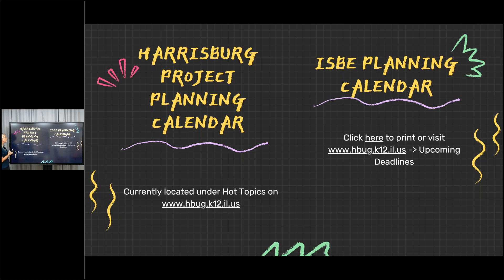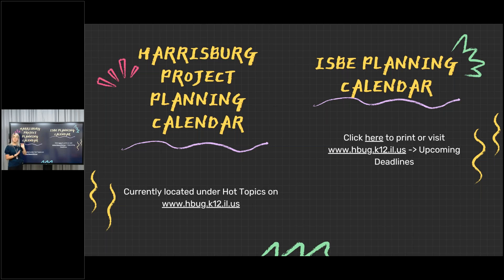The Harrisburg Project Planning Calendar is similar to ISBE's planning calendar, but we pull out things that relate to SIS or IDEA and just include I-Star related due dates, trainings, etc. ISBE's planning calendar has additional items related to special education but not specific to I-Star. We've made a separate one if you are just concerned about I-Star dates and don't want the SIS and other items.